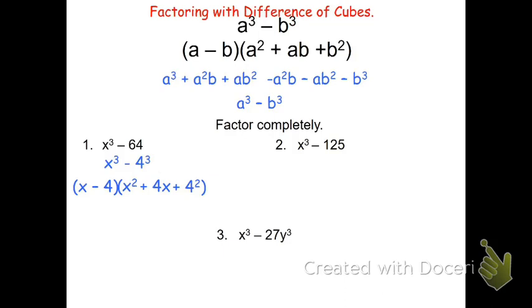When you're done, rewrite the 4². The 4² is really 16, so this can be written as (x - 4)(x² + 4x + 16). This will be the completely factored form.